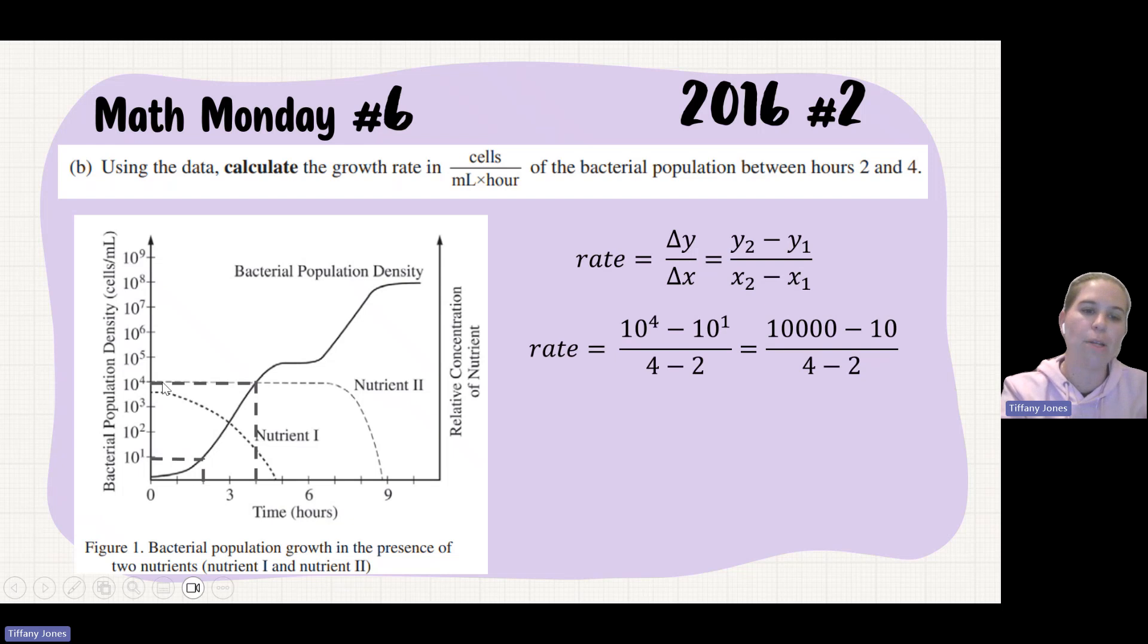So we saw that at 4 hours it was 10 to the 4th. So we have 10 to the 4th. And then we saw at 2 hours that it was 10 to the 1st. So 10 to the 4th minus 10 to the 1st. Students oftentimes make a mistake here. And then they just say 10 to the 3rd. But if you expand that out, you're going to see that 10 to the 4th is actually 10,000. And 10 to the 1st is just 10. And then, of course, our x is on the bottom being our x2, our 4, minus our 2.